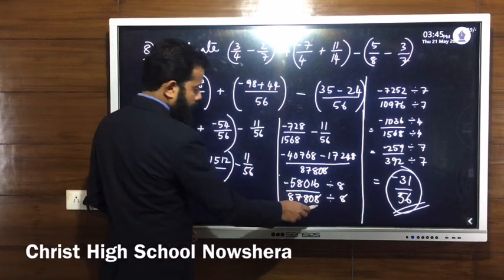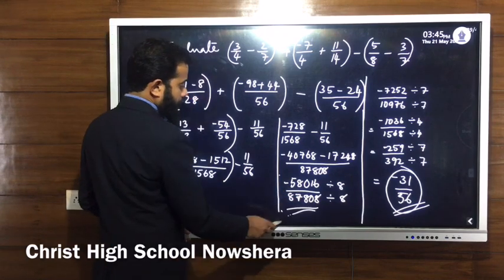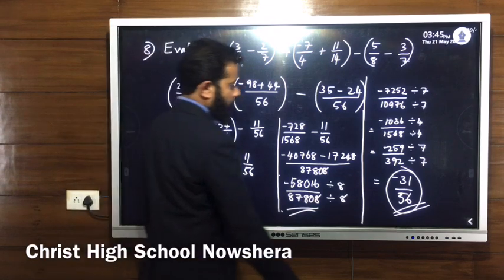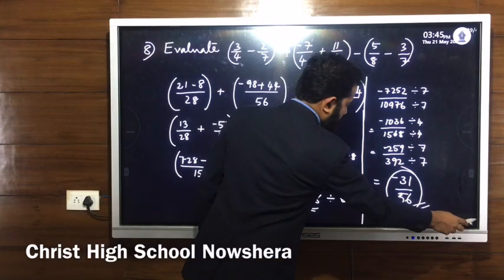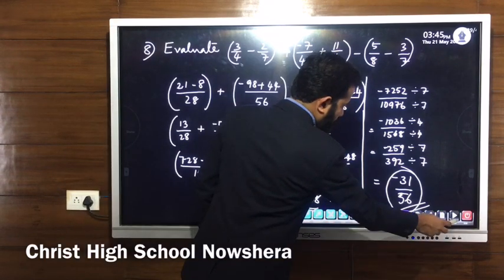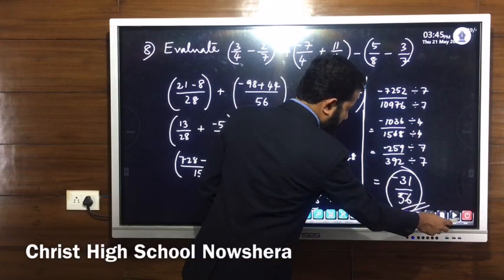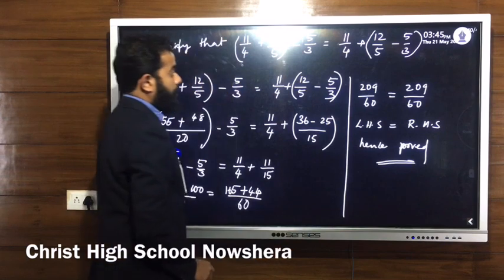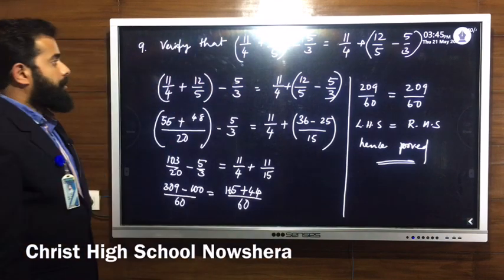Till here the steps are finished. Now make the standard form by finding the common factors and dividing both numerator and denominator.